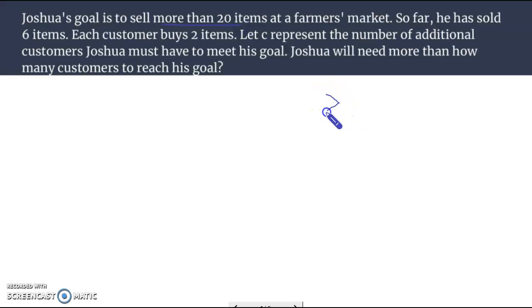So right away we can say greater than 20. So far he's sold 6 items and each customer buys 2 items. The 6 items are already accounted for. And C is representing the number of customers. 2 is how many items each customer buys. That sets up our inequality: 2C plus 6 greater than 20.